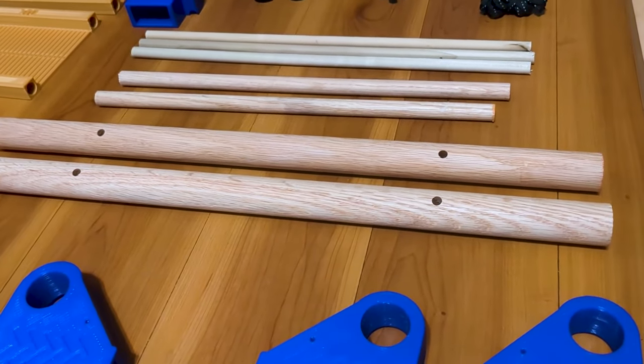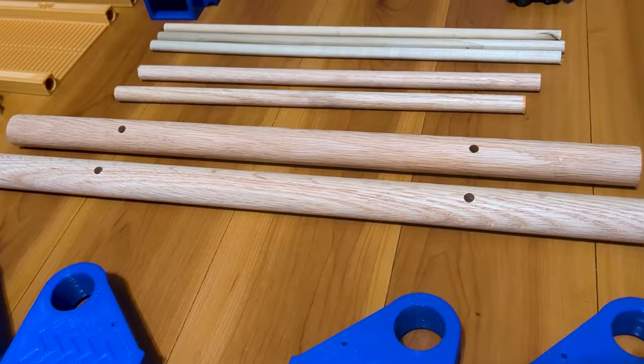Over here, we have the 1.5 inch dowels that are used for the warp beam and the cloth beam, respectively.